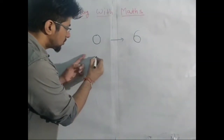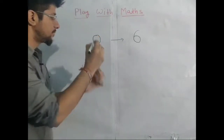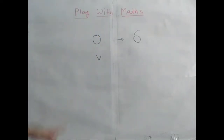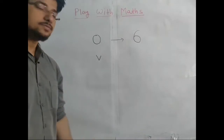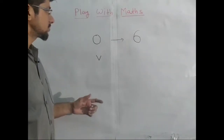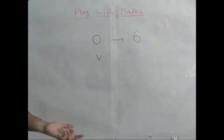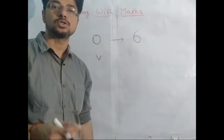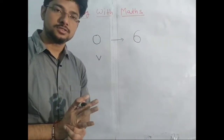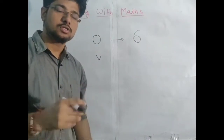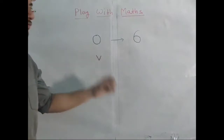Now this time you have this line. Can you make a six using this? The condition is the same — you can make either a curved line or a straight line. Think about it — can you make a six out of this?